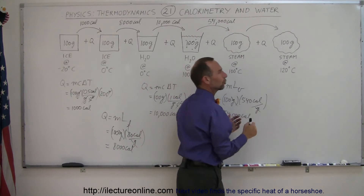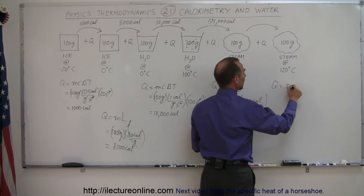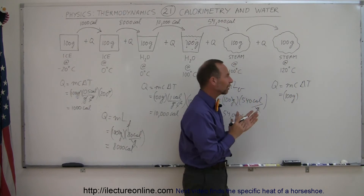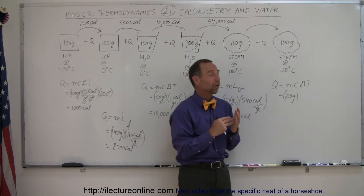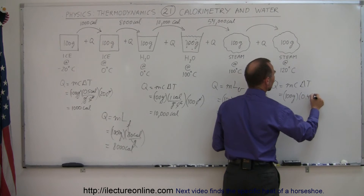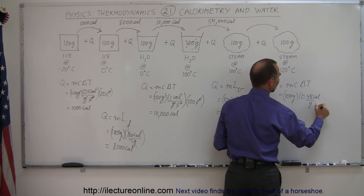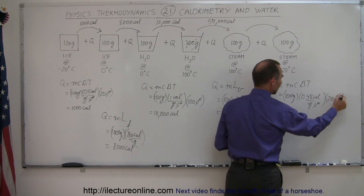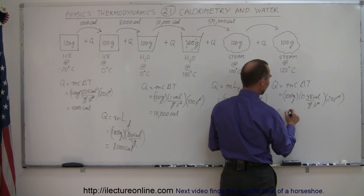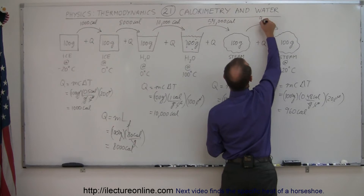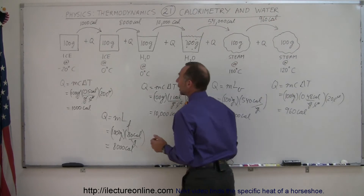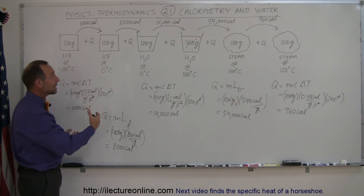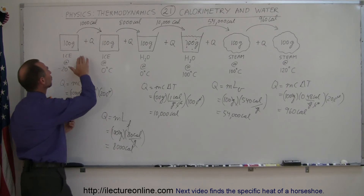To heat the steam from 100°C to 120°C, we use Q = mcΔT again. The mass is 100 grams, and the specific heat of steam is 0.48 calories per gram per °C — almost the same as ice at 0.5. Multiplying by ΔT = 20°C gives 960 calories. So for the same temperature change, ice and steam require nearly the same amount of heat.